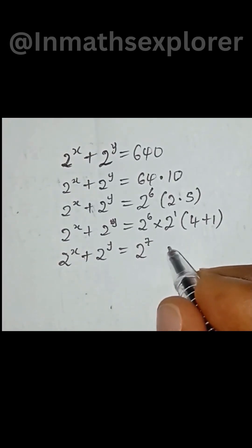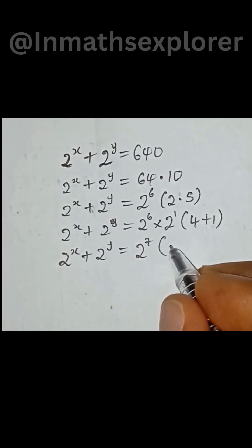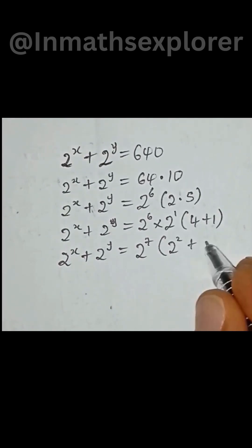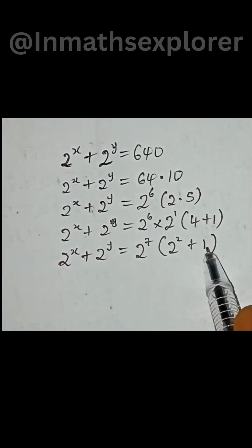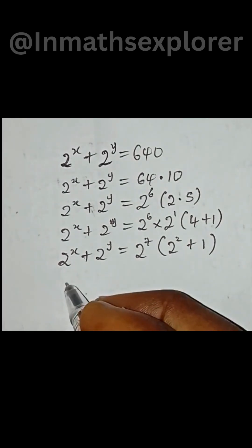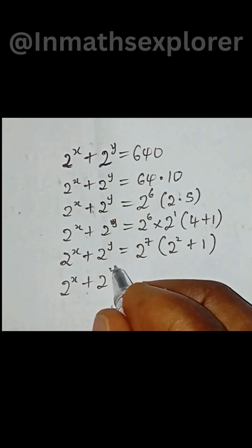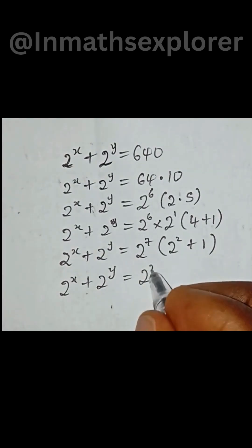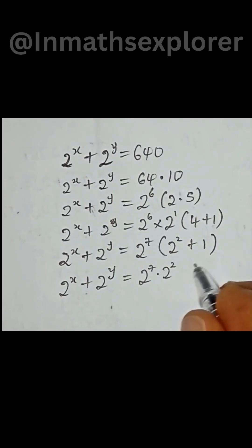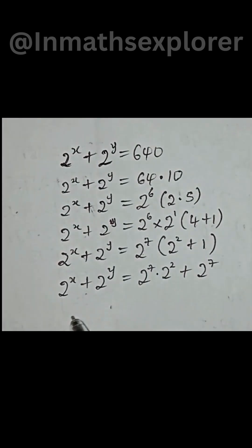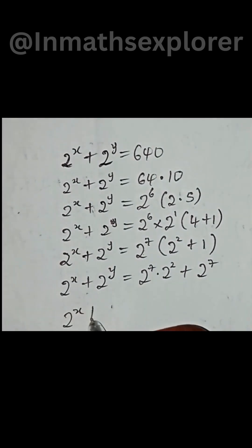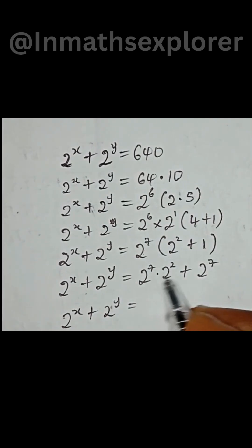This can be split as 2 to the power of 2, that is 4, then plus 1 in brackets. Now from here we can multiply through what we have in the brackets with 2 to the power of 7. So we have 2 to the power of 7 multiplied by 4, plus 2 to the power of 7 multiplied by 1. When we multiply, the exponents will be added.